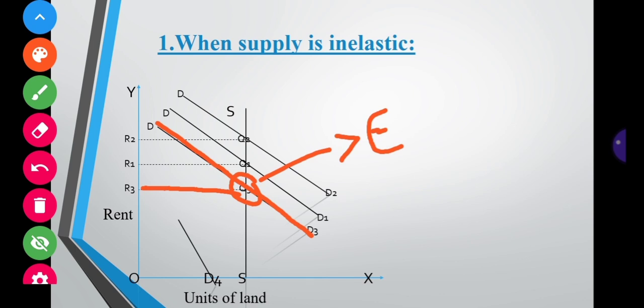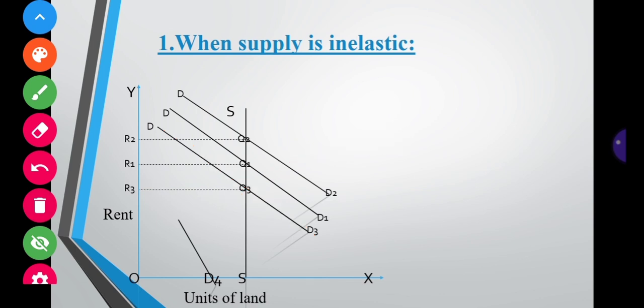Given the supply curve, when demand increases rent also increases, and when demand falls rent also falls. Now assume there is an entirely new country with surplus land freely available. In that situation there will be no rent — this is represented by curve D4, where demand for land is less than the supply. This concept is taken from the Ricardian Theory of Rent.